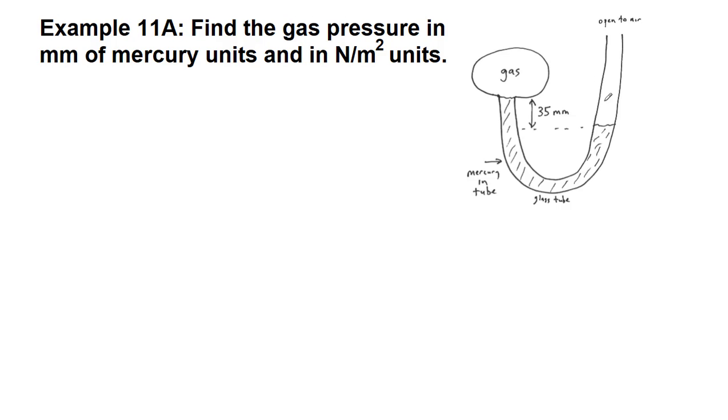So in this example, we have a scientific instrument here that is trying to figure out the pressure of this unknown gas. And it's using mercury in a glass tube. And we can see the height of the mercury on the left and the right is different.